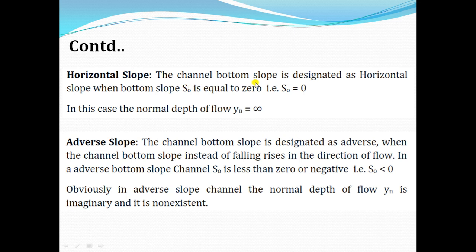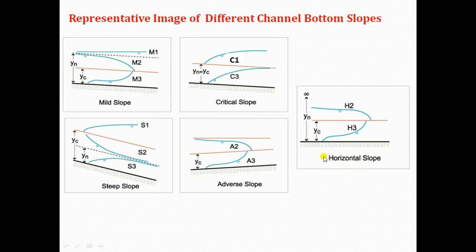Horizontal slope: the channel bottom slope is designated as horizontal slope when the bottom slope S0 is equal to 0. If the bottom of the channel is flat, it is a horizontal slope. In this case, the normal depth of flow is infinity. For flow to occur in such a horizontal slope channel where the bottom is flat with S0 equal to 0, the depth of flow would need to be extremely large — the normal depth approaches infinity.